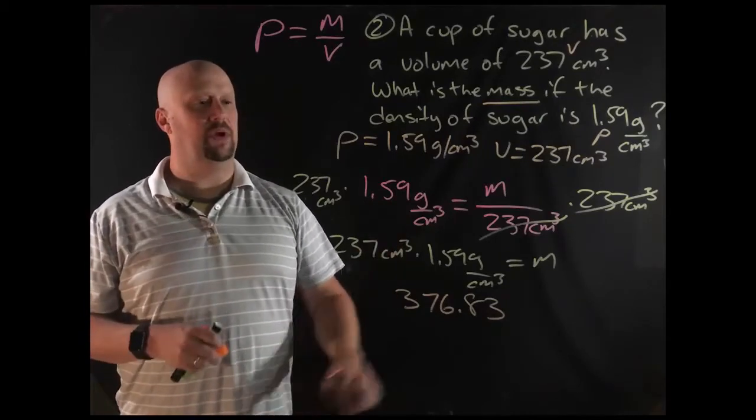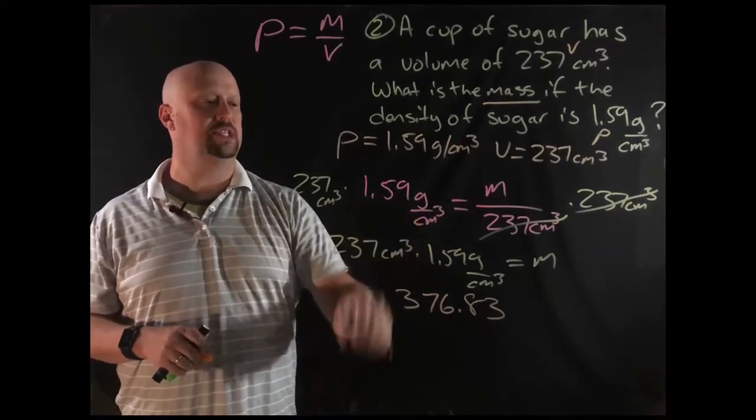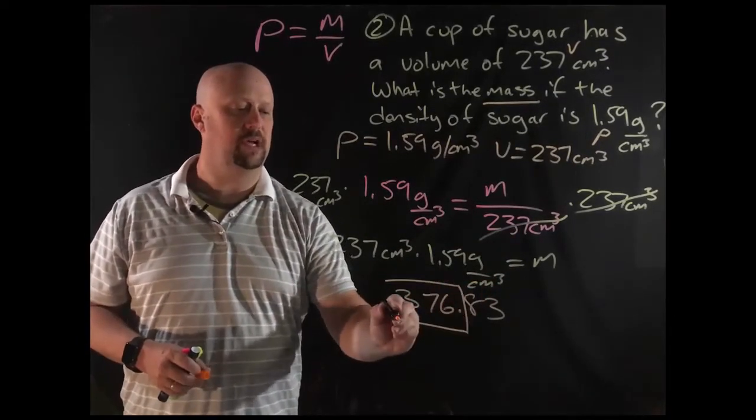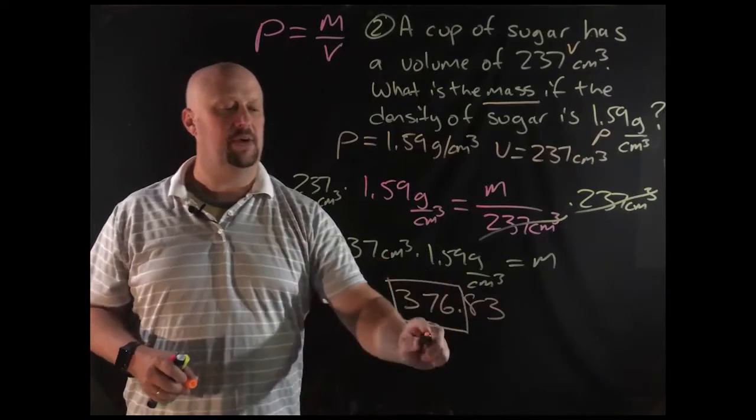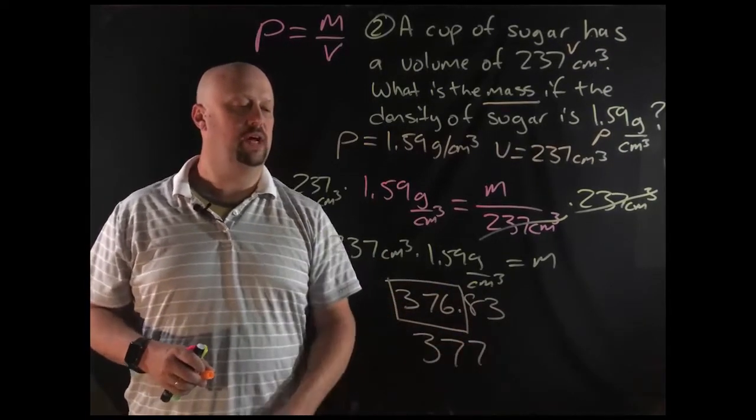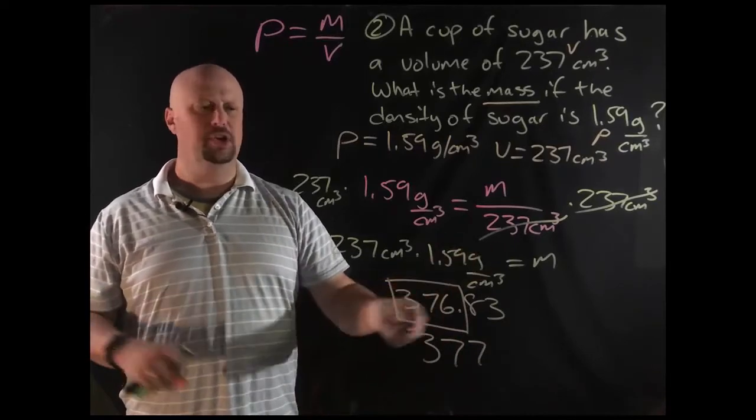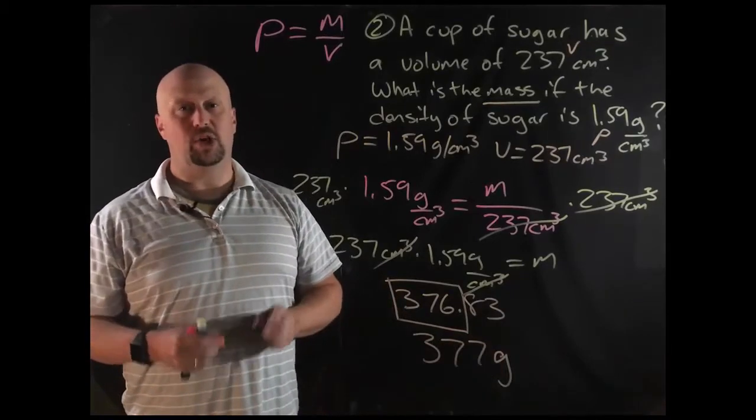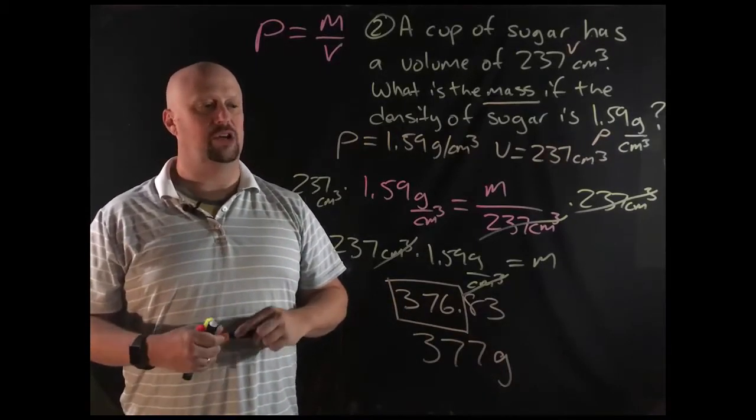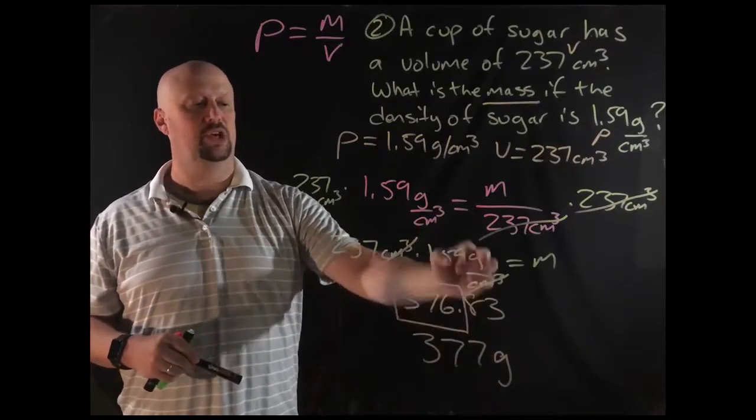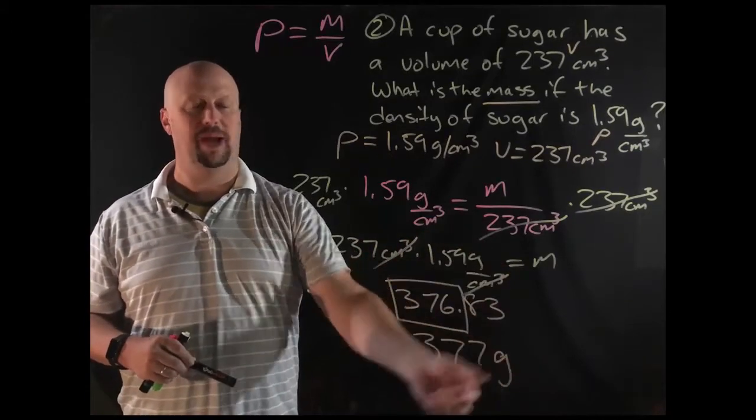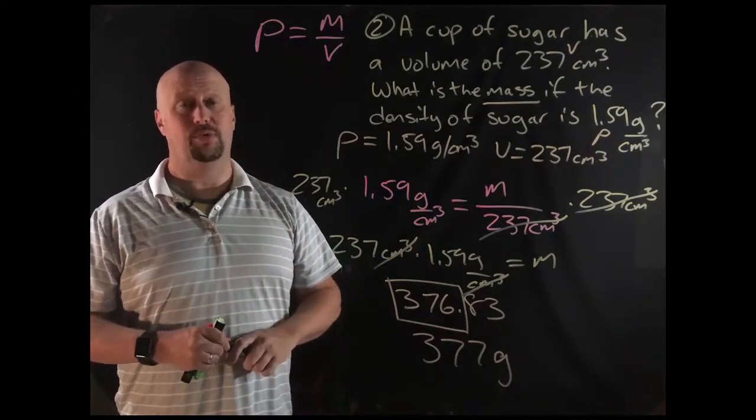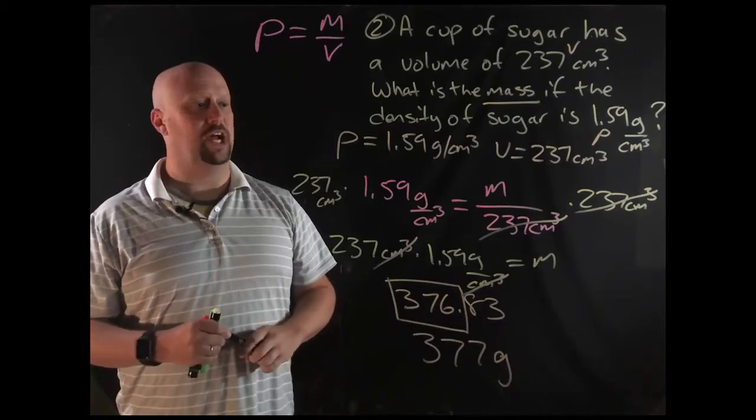We get 376.83. Again, sig figs matter, right? So go back to your original problem. I've got one, two, three sig figs, one, two, three sig figs. That means my answer should have three sig figs, so I'm going to cut it off there. That eight makes that round up. We've got 377. What are your units? Well, if we go back up here, centimeters cubed canceled out, and we get grams. By the way, that's always a good check on whether or not you did your algebra correctly. If the units canceled and left you with the units that you want, I want grams for mass, then you probably did your algebra right. And if those units didn't cancel out like that, then you probably did your algebra wrong. So that's a good check.